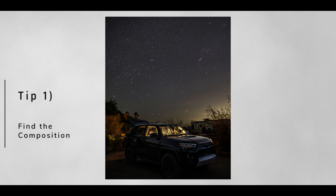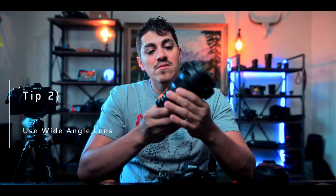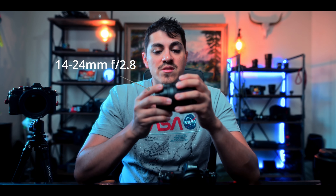First things first: work on your composition. Scope out areas during the day using the lens you're actually going to be capturing with. In most cases when capturing nightscape timelapses, you want a wide angle lens — something like a 14-24mm. Another great choice is a wide angle prime such as a 35mm, 20mm, or 24mm, which will give you better light performance overall.